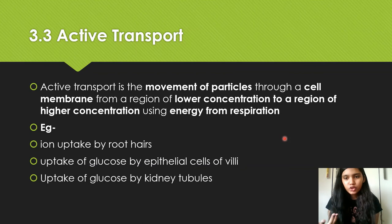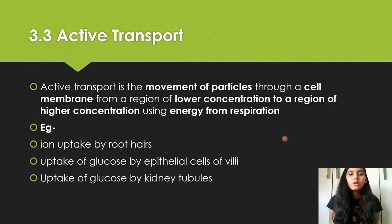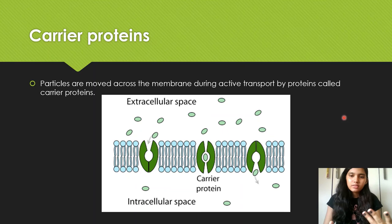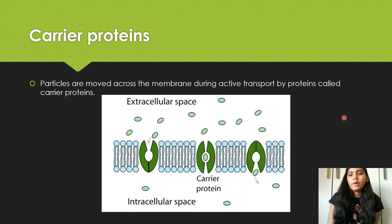Examples of active transport: ions are taken up by root hair cells via active transport because the soil has a lower concentration of ions while plants have a greater concentration. Then there's the uptake of glucose by epithelial cells in the small intestine, and the uptake of glucose by kidney tubules — you'll learn those in chapter 13. Mitochondria is always present in sites of active transport because it respires aerobically to provide energy in the form of ATP, and you can mention it in your answer to gain a mark.